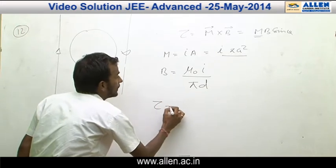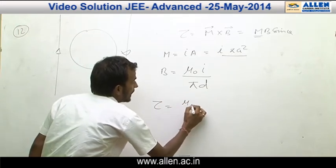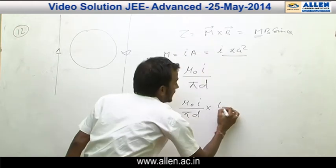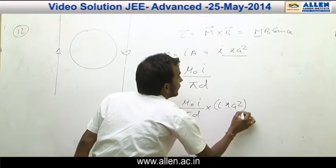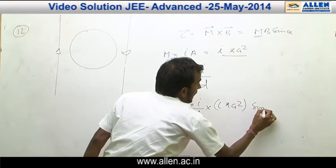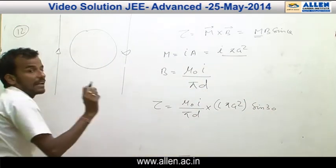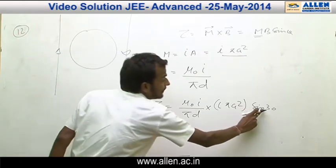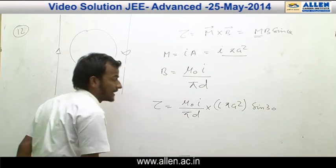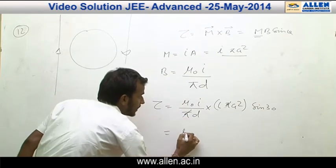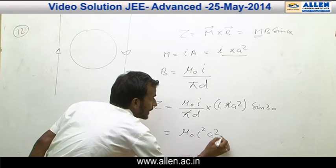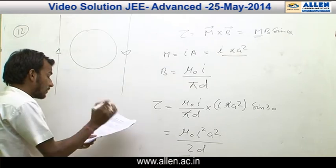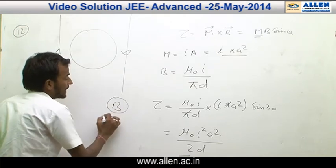By substituting the value in the formula, we get μ₀I/(πD) multiplied by the magnetic moment I·πA², and sin θ = sin 30°. As the ring is rotated by an angle of 30°, the area vector makes an angle of 30° with the magnetic field. So the angle between magnetic moment and magnetic field is 30°. We get μ₀I²A² / (2D), which is option D in the paper. Therefore, the answer is B.